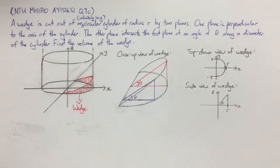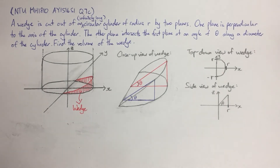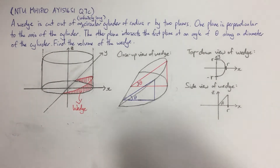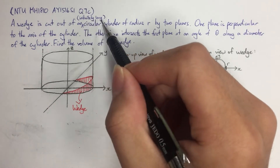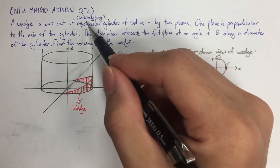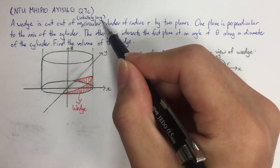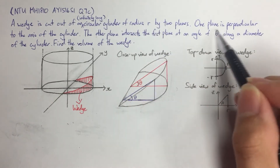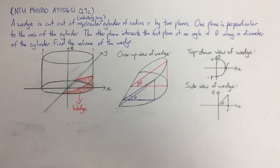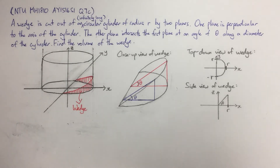When you solve this question, you will have to draw a diagram to visualize everything. Two things to note: the term 'infinitely long' does not appear in the original question paper — I added it as clarification. Also, I wrote radius r and angle theta, but the original question paper has radius 3 and theta equals 60 degrees. I'm going to solve in terms of r and theta; you can substitute the values back in to get the final answer.